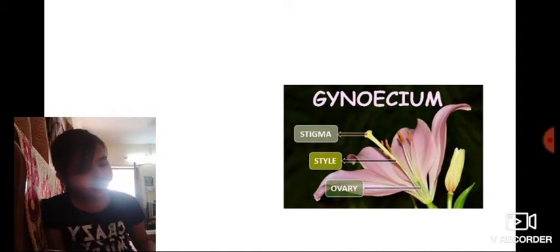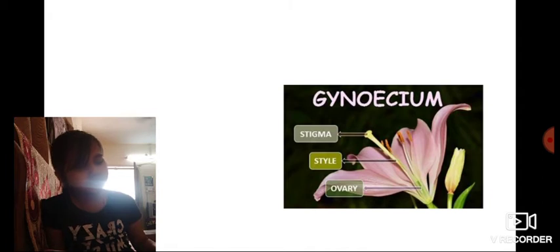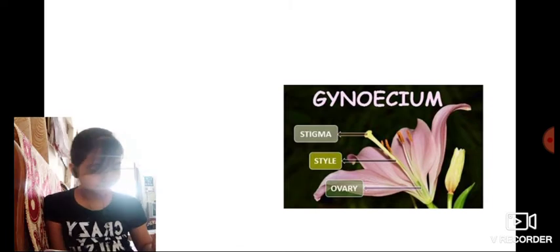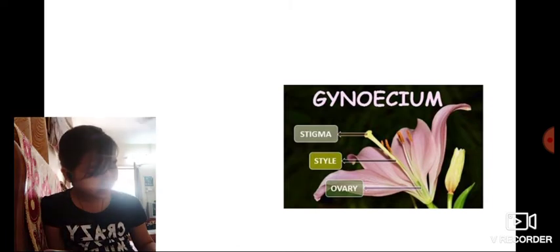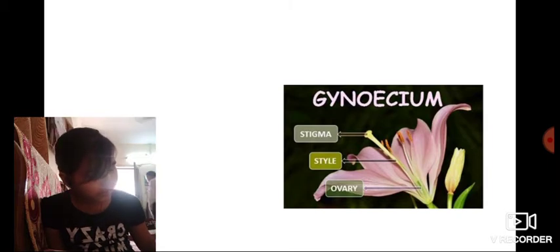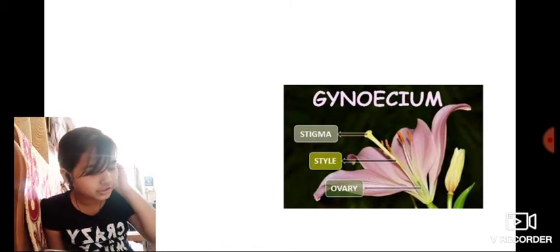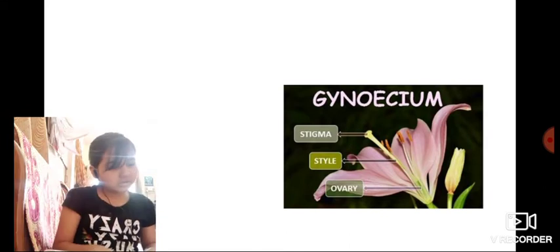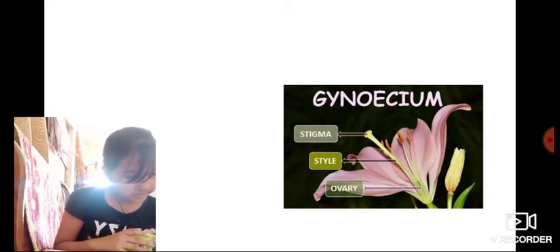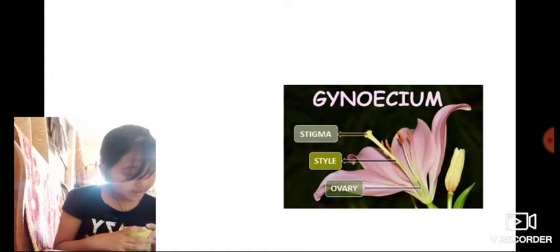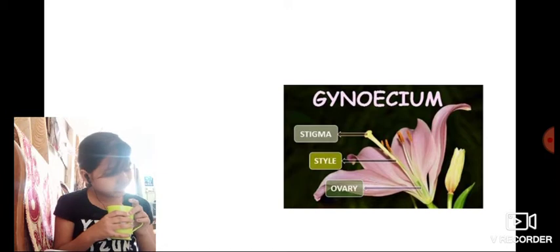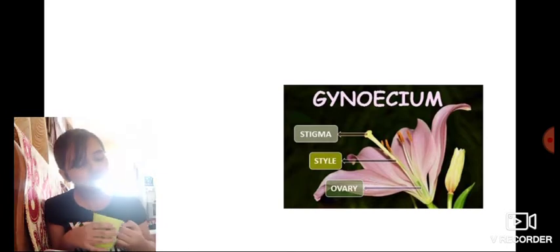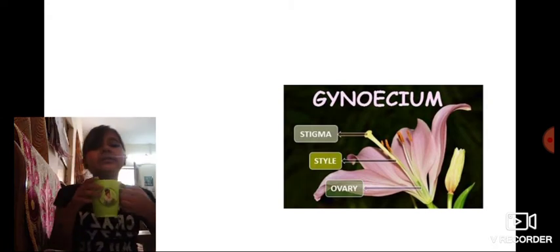Style is a long tube-like extension of the ovary and constitutes the middle part of the carpel. On the tip of the carpel there is a small disc-like structure called stigma. It is the place where pollen grains are received during pollination.